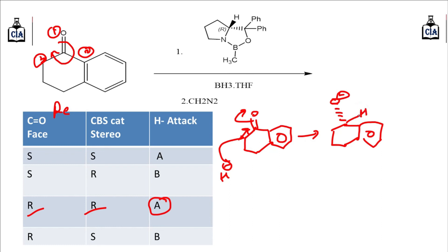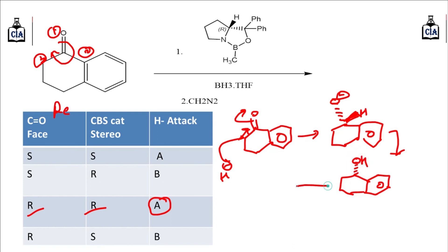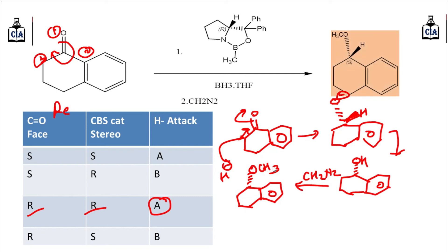So the hydride attack takes place from above the plane, giving us the product with an OH group. If we then treat this OH with CH2N2, the OH is converted into an OCH3 group — just replace the OH with OCH3. So our final product will be the methoxy compound.